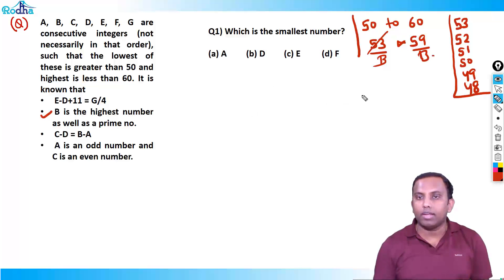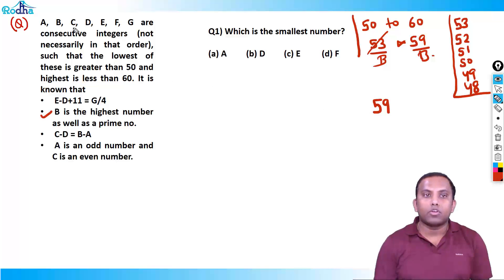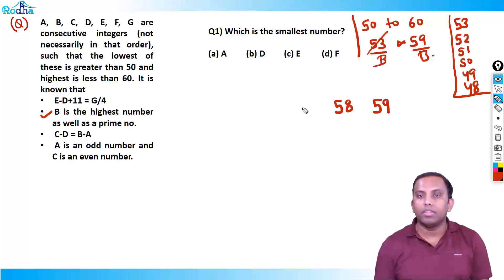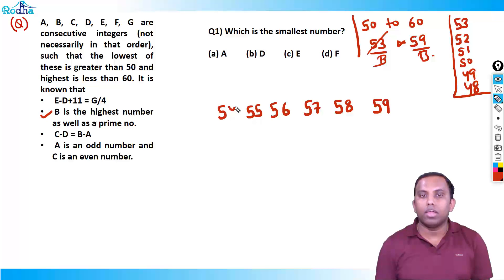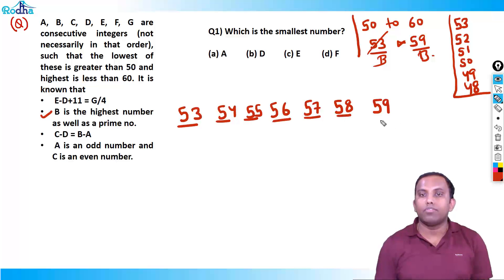That means my highest number is 59. There are 7 numbers here, so in decreasing order: 59, 58, 57, 56, 55, 54, and 53. These are my seven integers, and for sure 59 is B.